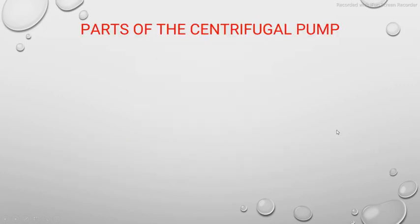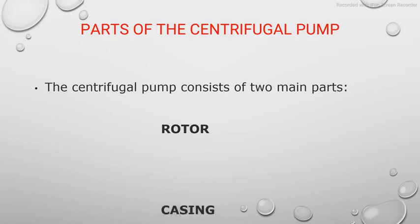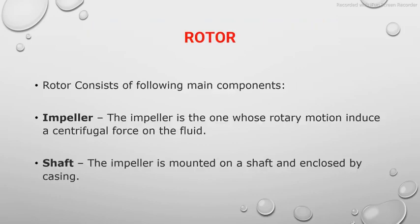Moving on to the parts of the centrifugal pump, it basically consists of two main parts: the first one is the rotor and the second one is the casing. The rotor consists of two main components: the impeller and the shaft.